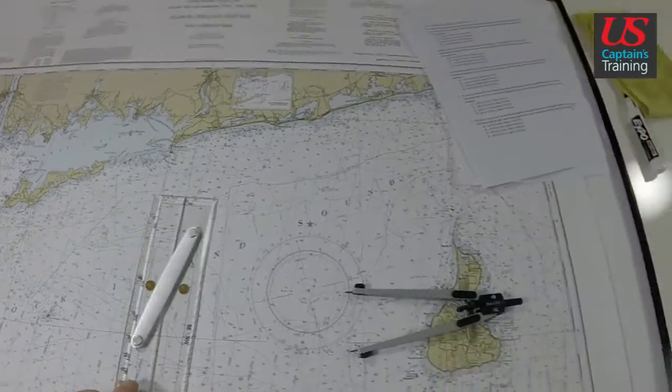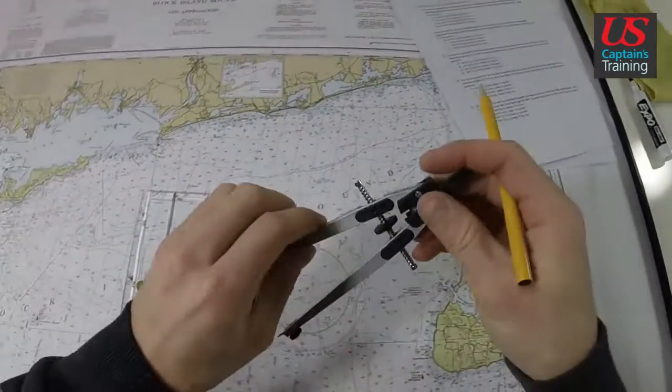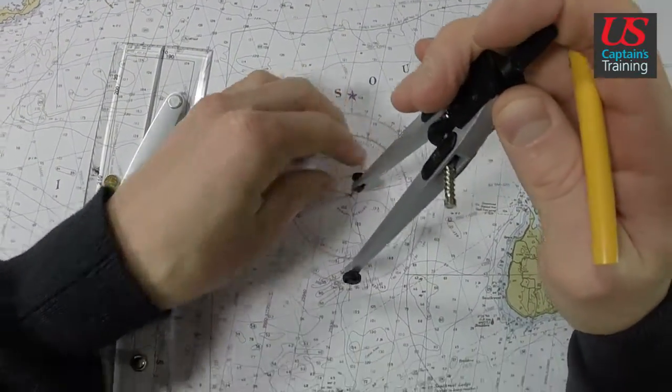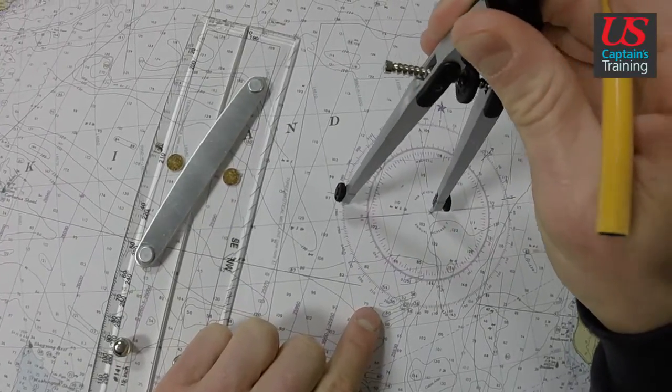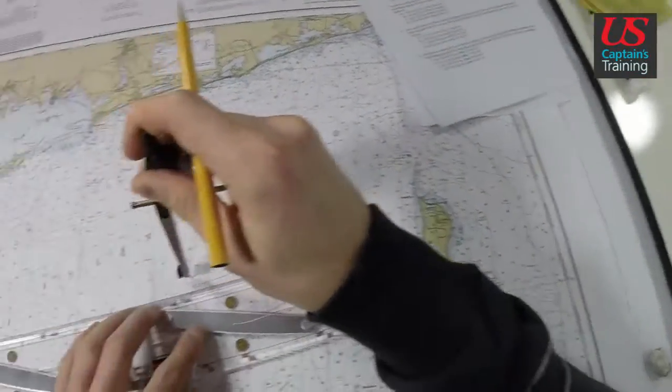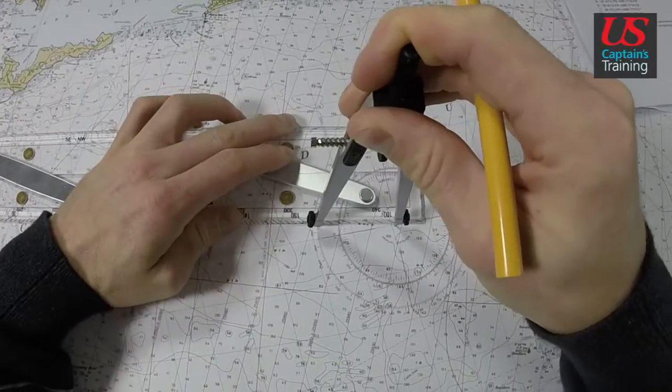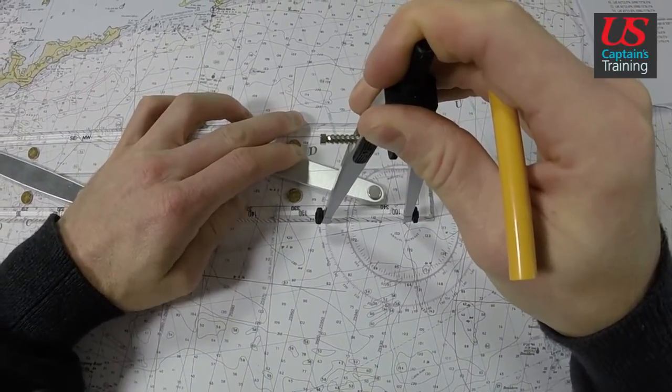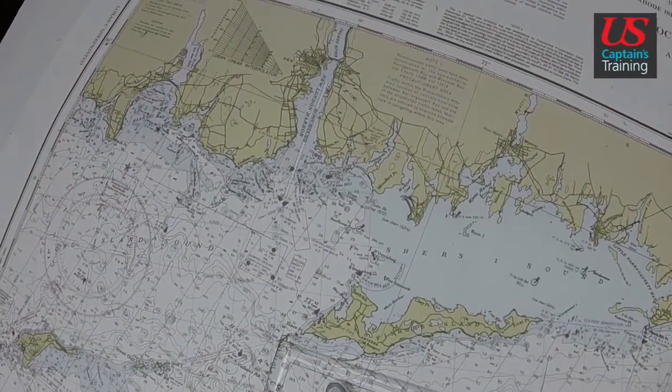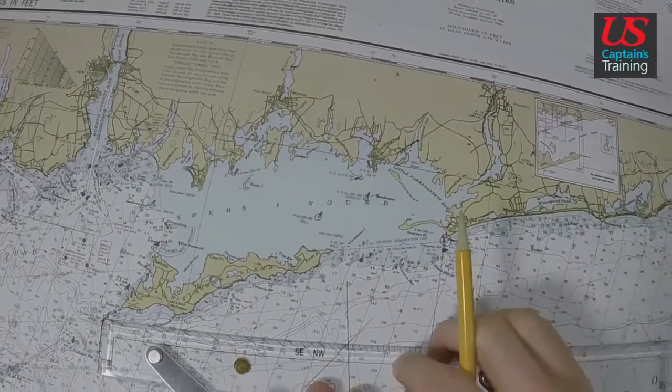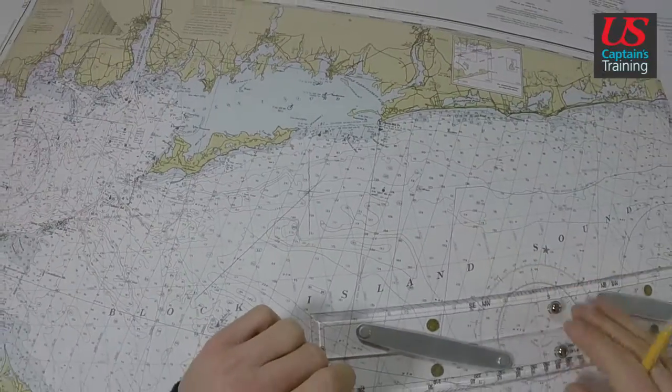Now third one: Race Rock Light 264 true. From the center, 264 from Race Rock Light. Use this side, come down, bump them up, they're parallel. 264. Look at that, that is beautiful. That's money right there, we nailed it.